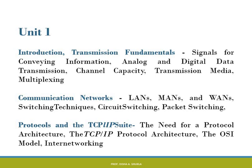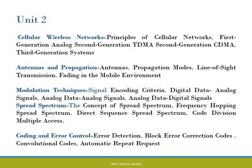Moving on, Unit 2 starts with cellular wireless networks. After covering the architecture of communication systems, we begin with the principles of cellular networks — the basic requirements and how cellular networks are built. This includes the evolution of communication systems: first generation, second generation, third generation, fourth generation, and so on. Following that, we study antennas and propagation. The pattern progresses from basic signal requirements and architecture, through transmission media, up to transmitters and receivers — that is, antennas.